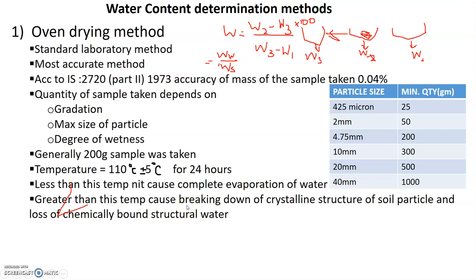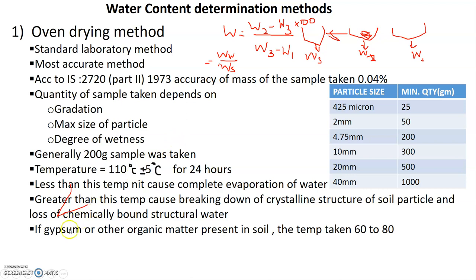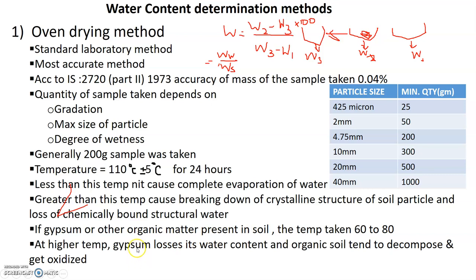Structural water is chemically bound, so evaporation of that water is not desired. For gypsum, the temperature is 60 to 80 degrees Celsius. Gypsum is not organic matter, but at higher temperatures it will lose its water. For organic soil, decomposition and oxidation can also occur.